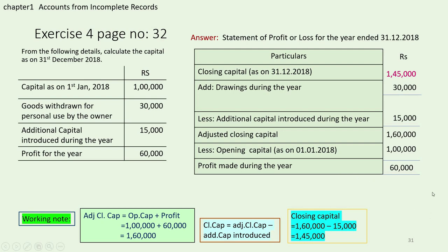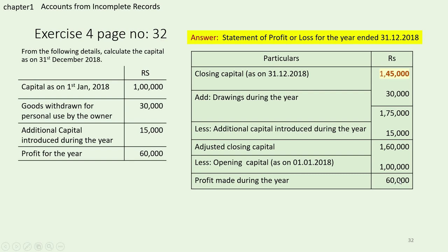We check: 1 lakh 45,000 plus drawings 30,000 gives 1 lakh 75,000. Minus additional capital 15,000 gives 1 lakh 60,000 — which is the adjusted closing capital we found. Minus opening capital 1 lakh gives profit of 60,000 — which is given in the problem. So what we have done is correct. First find adjusted closing capital, then find closing capital. In this problem the closing capital is 1 lakh 45,000.